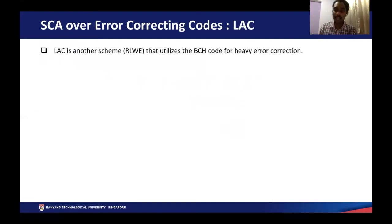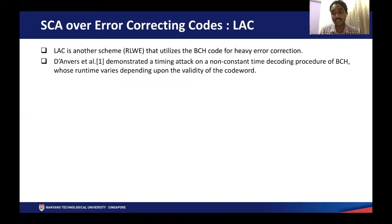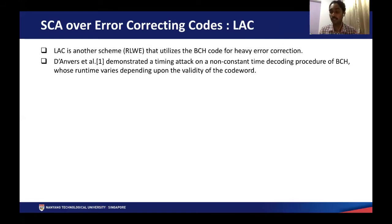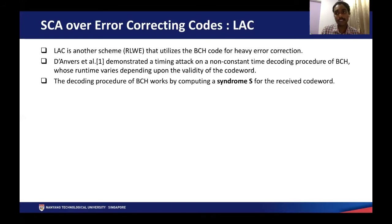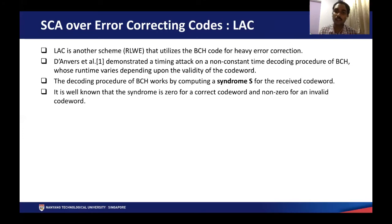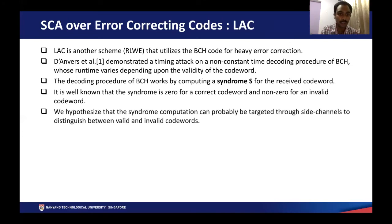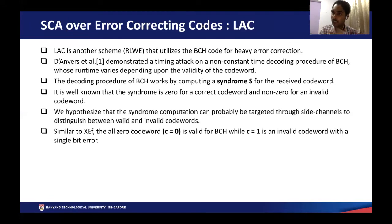In the case of LAC, which is another ring LWE scheme that utilizes the BCH code for error correction — as stated earlier, D'Anvers et al. demonstrated a timing attack on a variable-time implementation of the BCH decoding procedure — in our case, we are utilizing the EM side channel. The decoding process typically works by computing a syndrome for the received codeword. The syndrome is zero for a valid codeword and non-zero for an invalid codeword. We hypothesize that the syndrome computation can be targeted through side channels to efficiently distinguish between the two cases: C equal to zero (valid codeword) and C equal to one (invalid codeword with a single bit error). We follow the same approach, and the t-test again gives rise to several peaks, showing there are several easily distinguishable points.